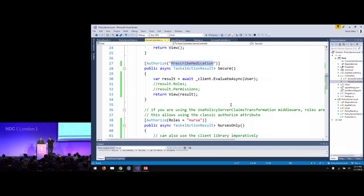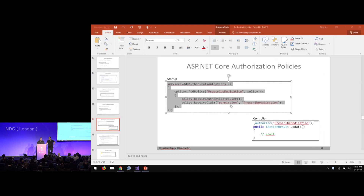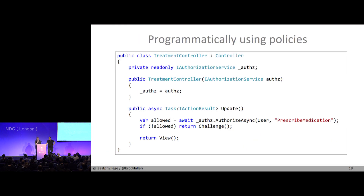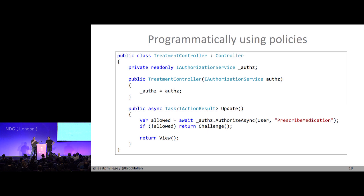The most common question we get when showing the new ASP.NET Core authorization API is: is there a version available for older versions of ASP.NET? Indeed there is — there's a guy called DavidParks8 on GitHub who backported the whole thing to ASP.NET 4.6, 4.5, and Web API.